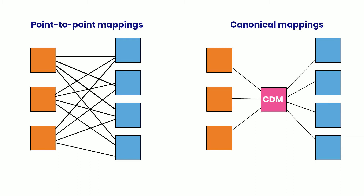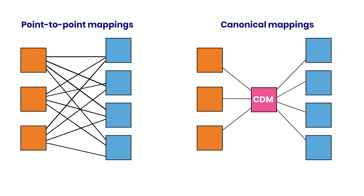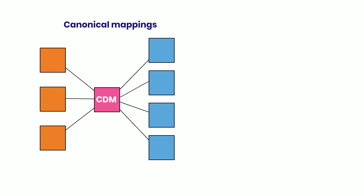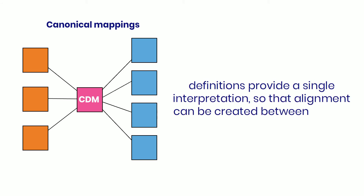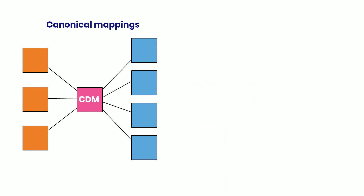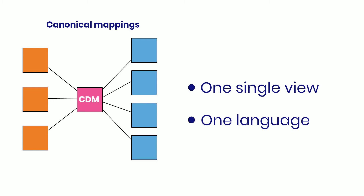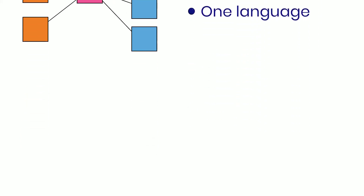These definitions provide a single interpretation of that specific attribute, so that alignment can be created between the client's varying definition of data fields. The CDM then functions as a single view and language around data models and entities used within the organization.